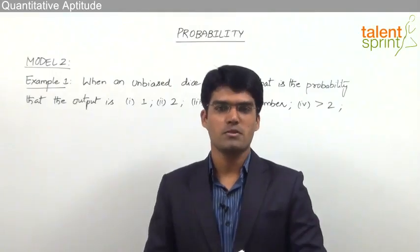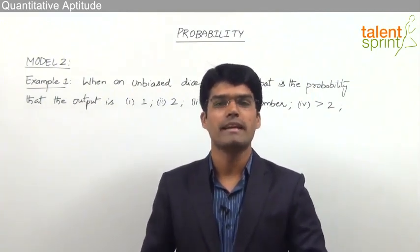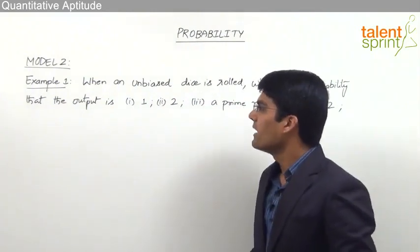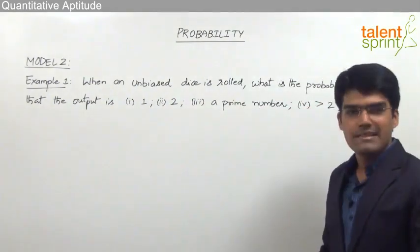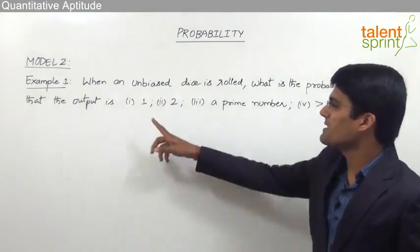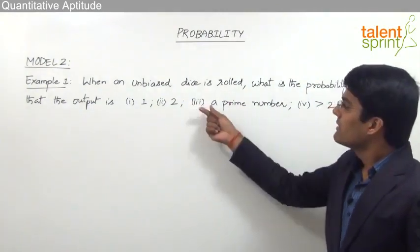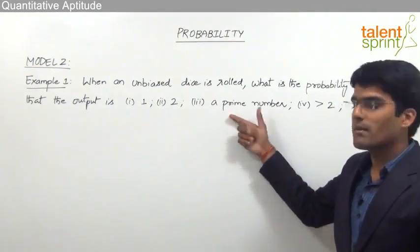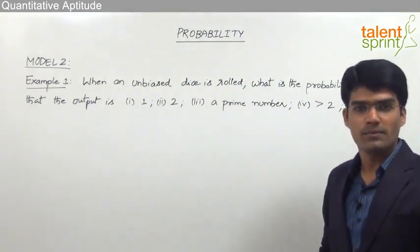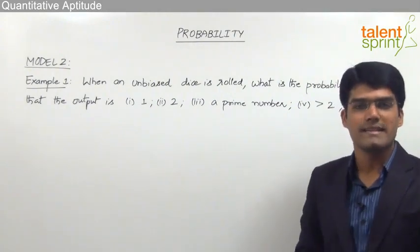Let us now take the second model from this topic of probability, where we shall discuss questions related to rolling a dice or throwing a dice. Let's look at the first example. When an unbiased dice is rolled, what is the probability that the output is: 1, 2, a prime number, or greater than 2? Let's see how to solve these questions based on throwing a dice.